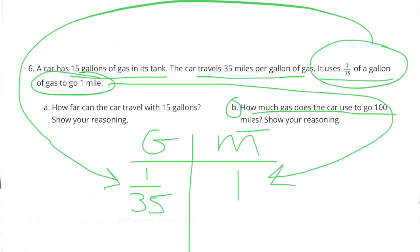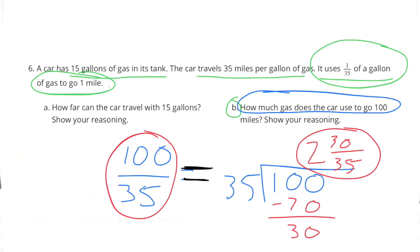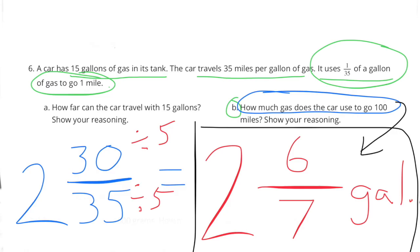Part B: How much gas does the car use to go 100 miles? Show your reasoning. We know that the car goes 1 mile on 1/35th of a gallon of gas. Now we're going to multiply the 1 mile times 100 to have 100 miles. Since we multiplied the right side by 100, we need to multiply the left side by 100. 1/35th gallon multiplied by 100 equals 100/35ths. 100 divided by 35 is 2 and 30/35ths. This can be reduced to 2 and 6/7ths gallons. So it uses almost 3 gallons of gas to go 100 miles.